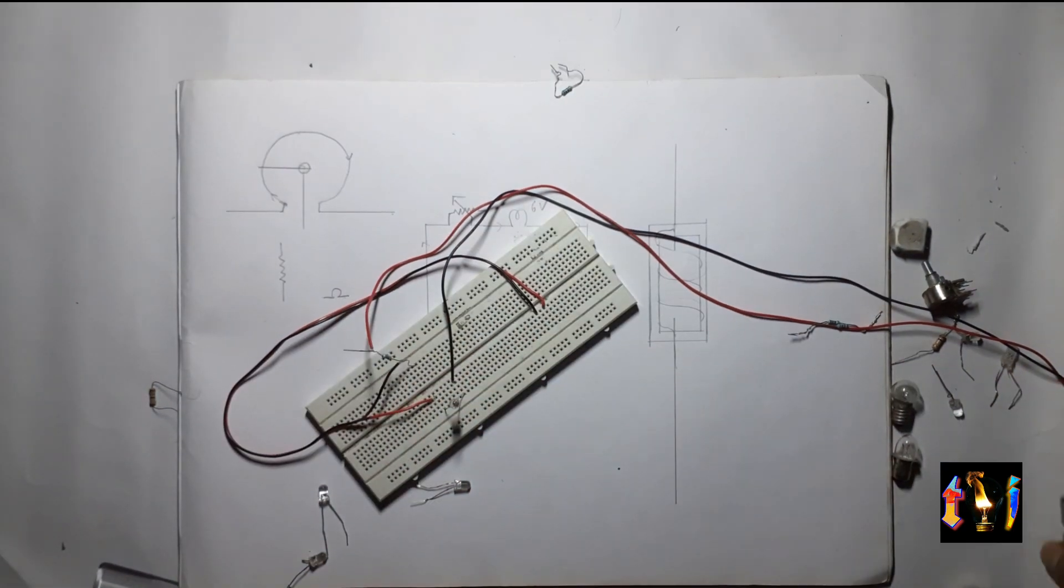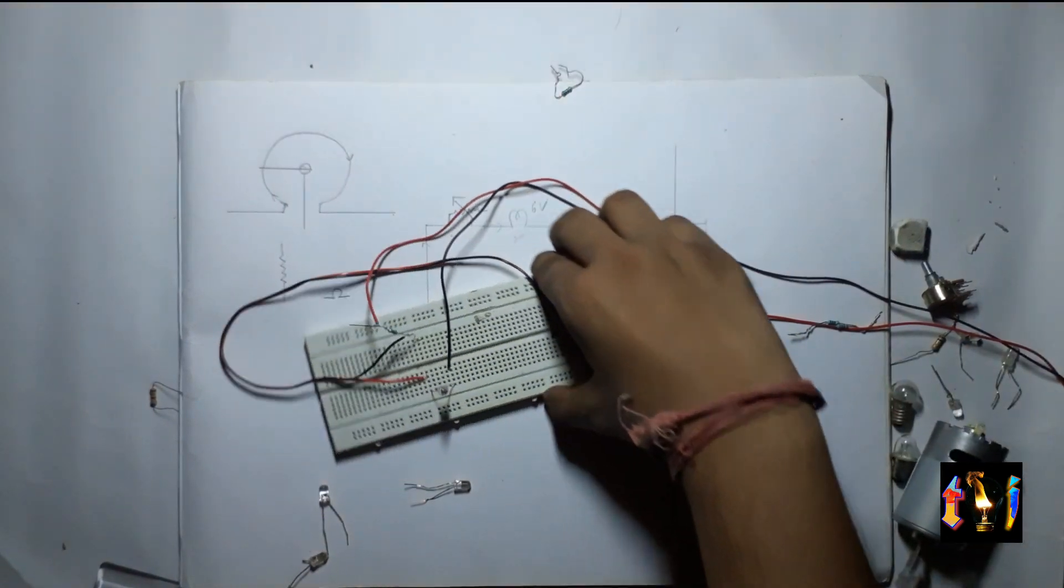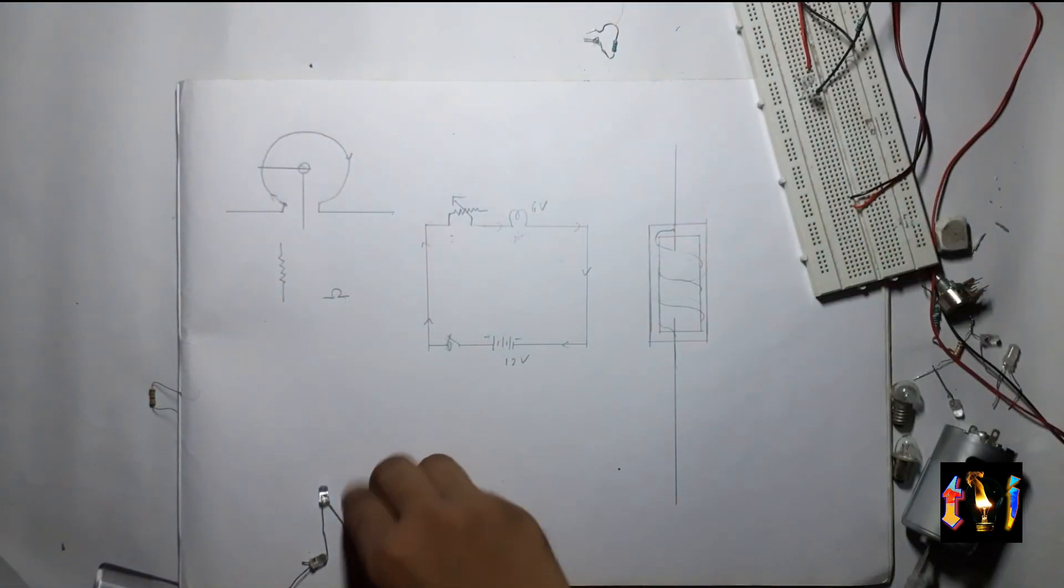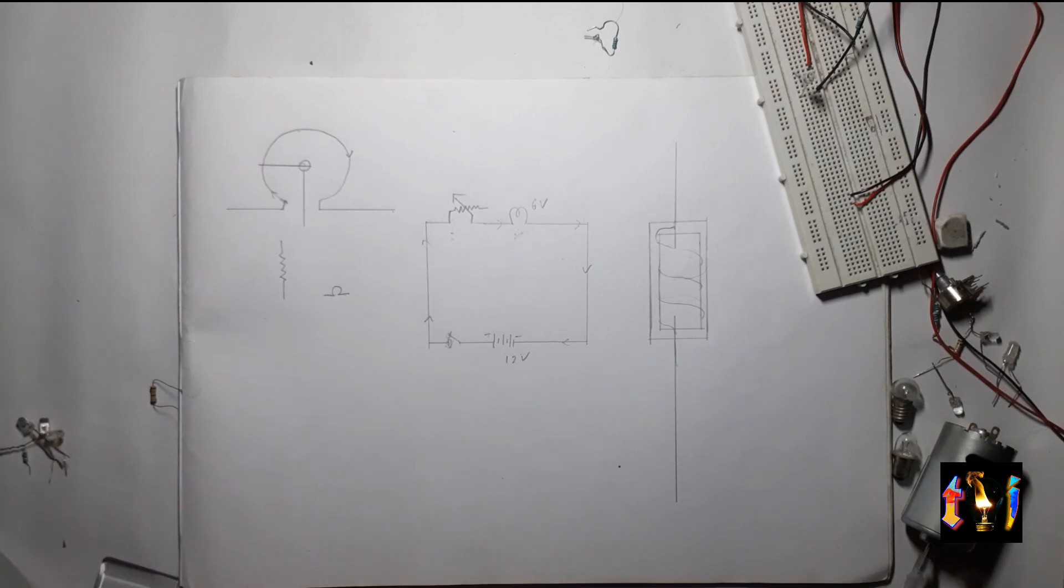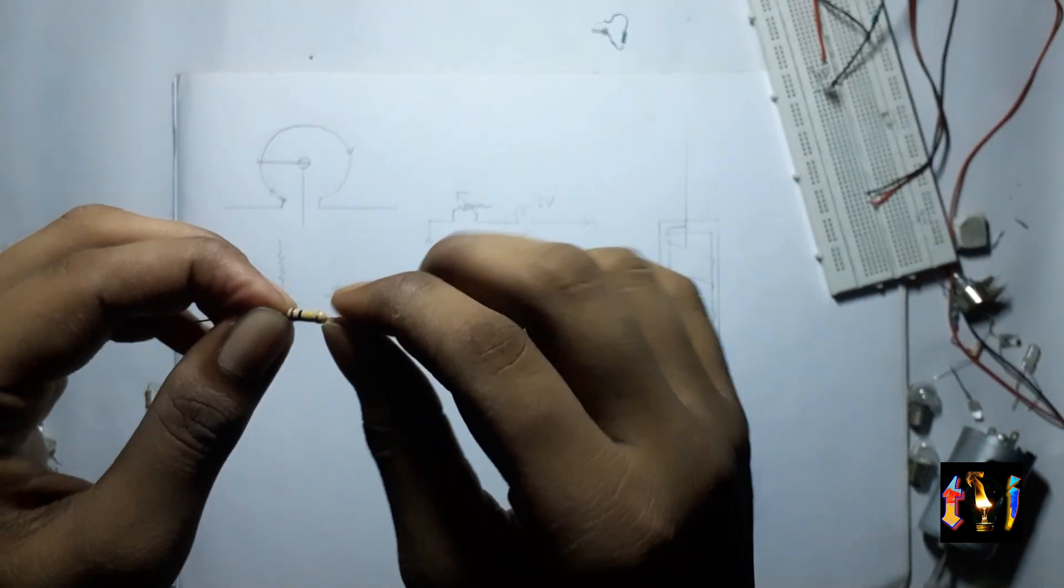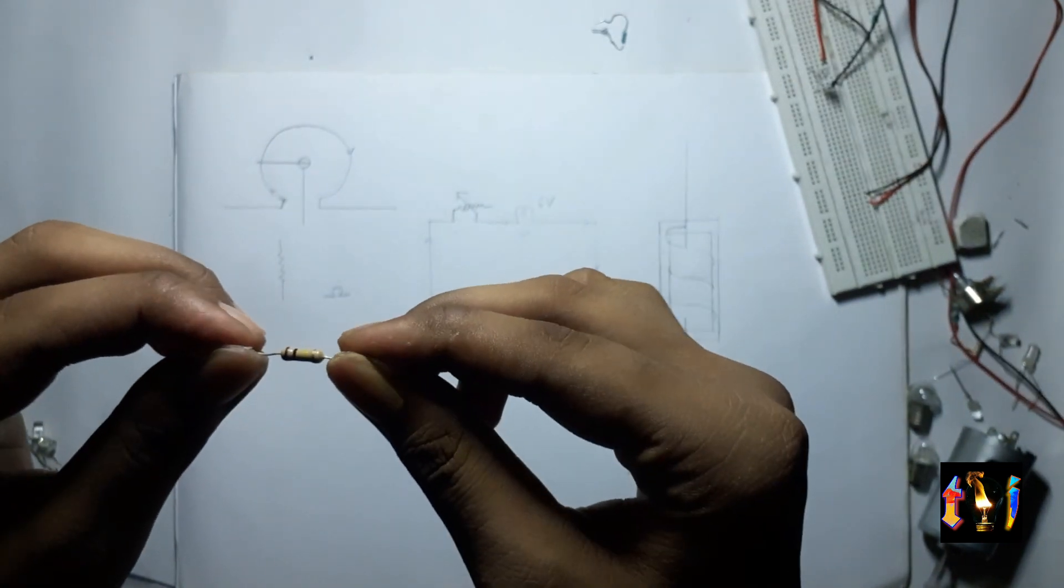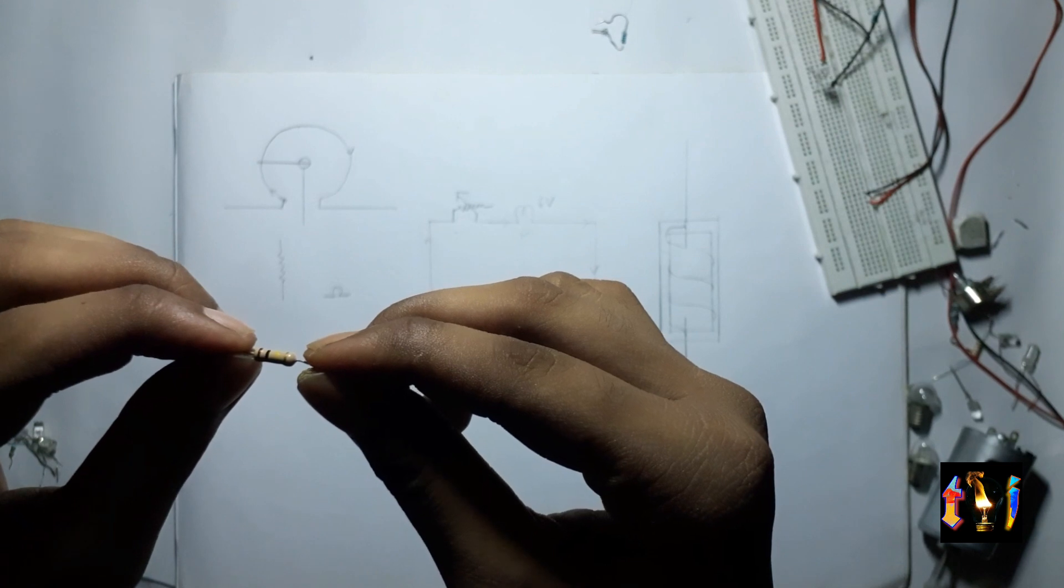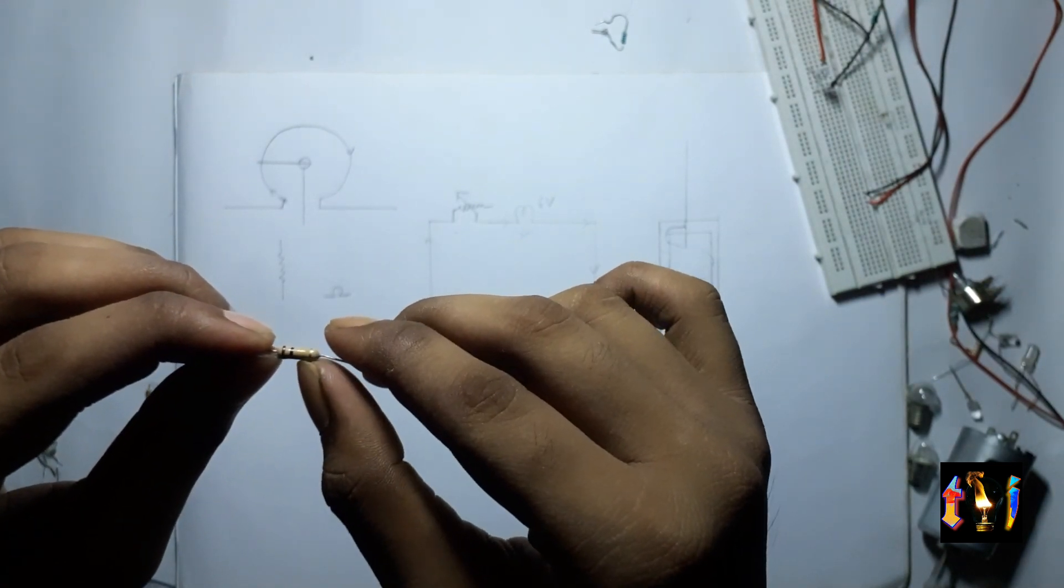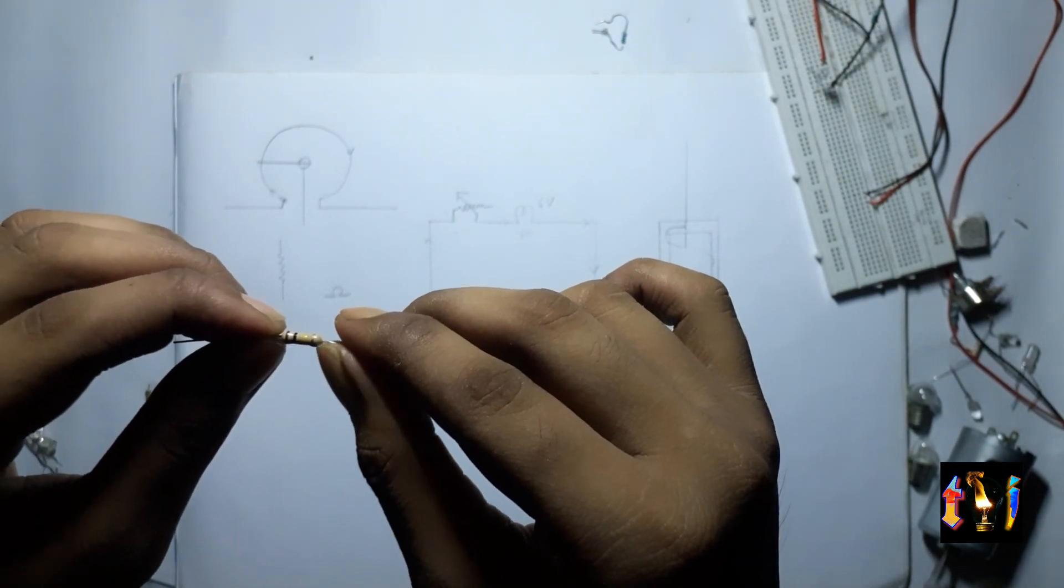Now let's talk about the color coding of the resistors. The first one is brown the second one is black and the third one is orange while the fourth one is silver.